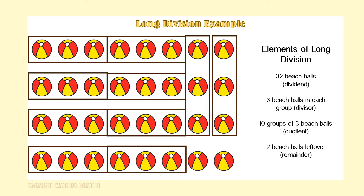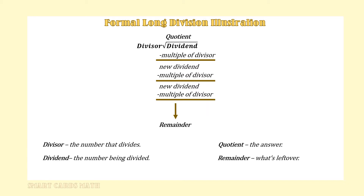The specific elements of division in this illustration are: the dividend is 32, the divisor is 3, the quotient is 10, and the remainder is 2. More formally, when we begin the long division process, we start with the long division box. Inside the box is the dividend, outside the box is the divisor, on top of the box is the quotient, and below the box is the remainder. We continue to subtract multiples of the divisor until we arrive at the remainder. The divisor is the number that divides, the dividend is the number being divided, the quotient is the answer, and the remainder is what's left over.